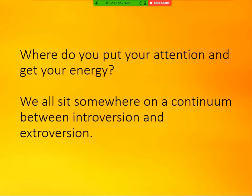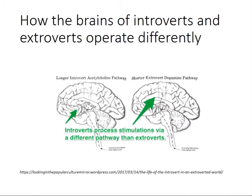Our key theme here is: where do you put your attention and get your energy? We all sit somewhere on a continuum between introversion and extroversion, and there are physiological differences between introverts and extroverts. As Dr. Marti Olsen Laney, author of The Introvert Advantage, explains: while extroverts are linked with the dopamine and adrenaline energy-spending sympathetic nervous system, introverts are connected with the acetylcholine energy-conserving parasympathetic nervous system. So introverts need less external stimulation because they are more sensitive to dopamine, and if they get too much they will feel overstimulated and anxious.